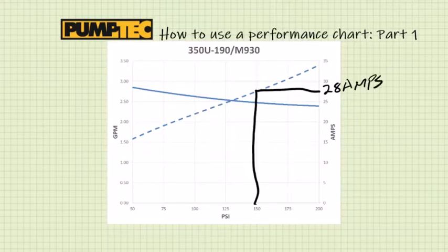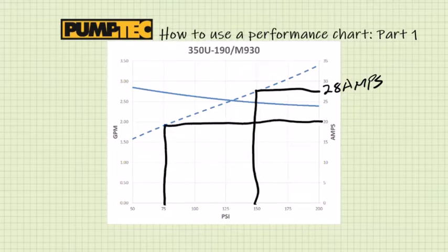And then at 75 PSI, draw up until you hit the line, go over, and it would do just under 20 amps.